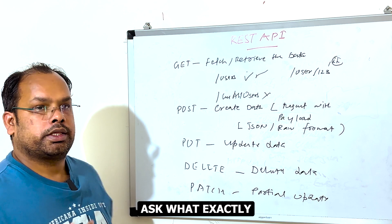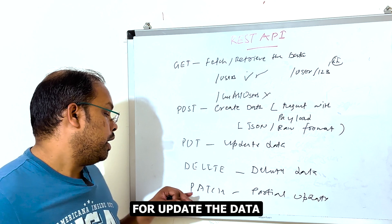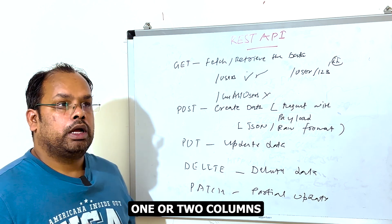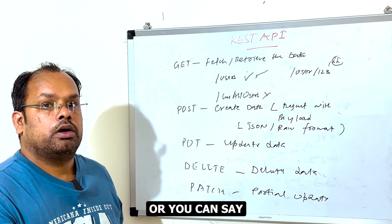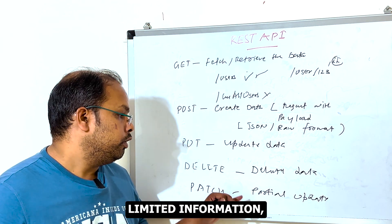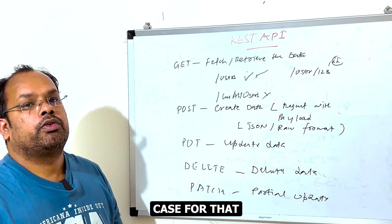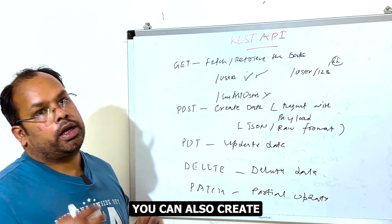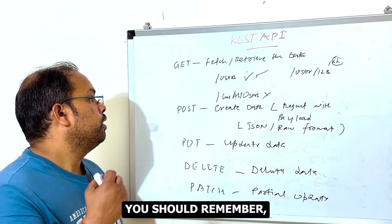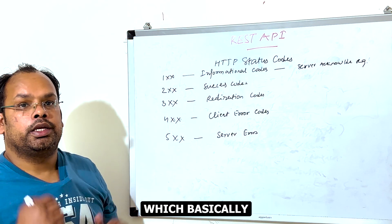A common interview question is: what is the difference between PUT and PATCH? PUT is for updating the entire data object, while PATCH is for updating partial data — for example, if you only want to update one or two columns and don't want to send the entire object. With a limited set of data, PATCH is the perfect use case. Also note that PUT can be used to create data as well.